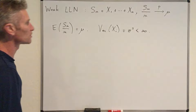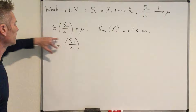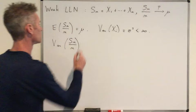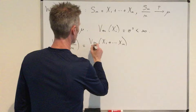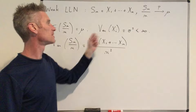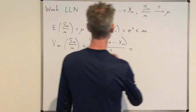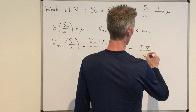Under this assumption, the variance of the empirical mean Sn over n equals 1 over n squared times the variance of the sum. Because those random variables are independent, the variance of the sum equals n times the common variance of each Xi — that's n times sigma squared — but divided by n squared. So this equals sigma squared over n.